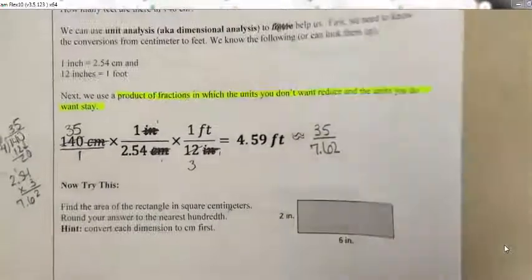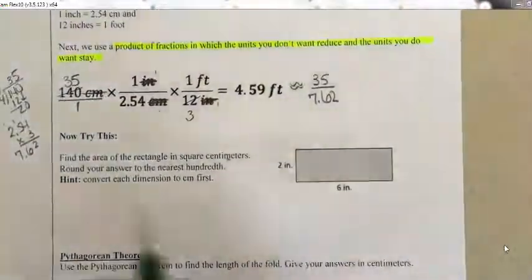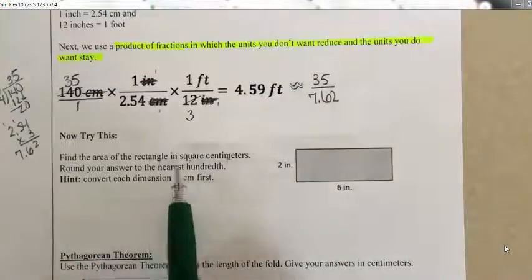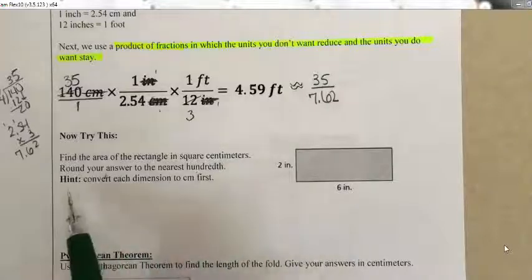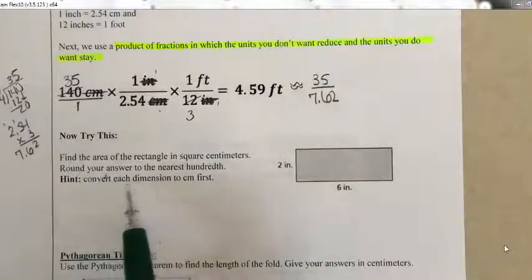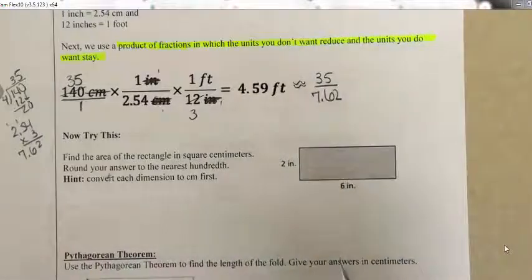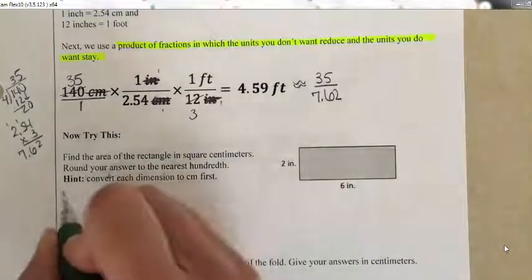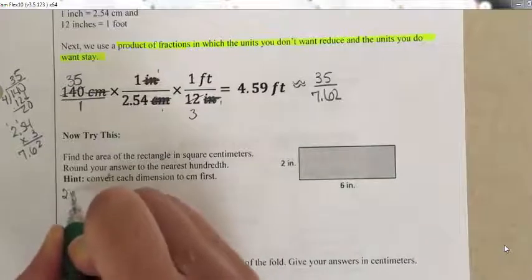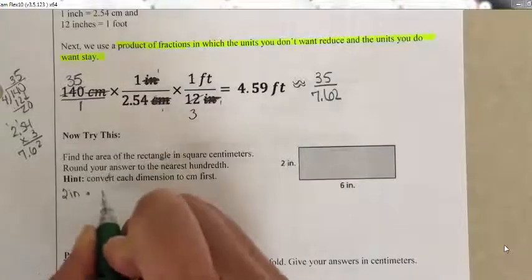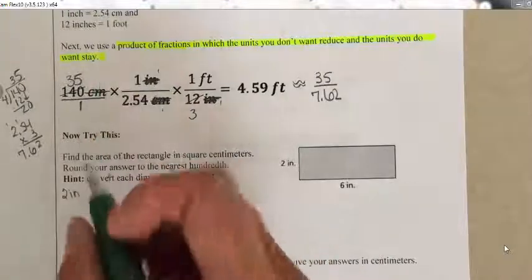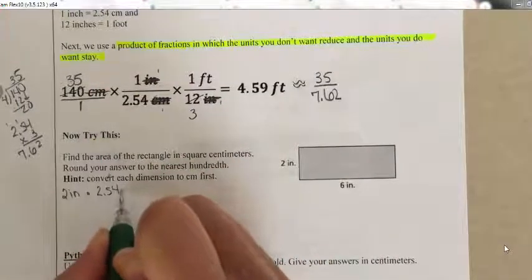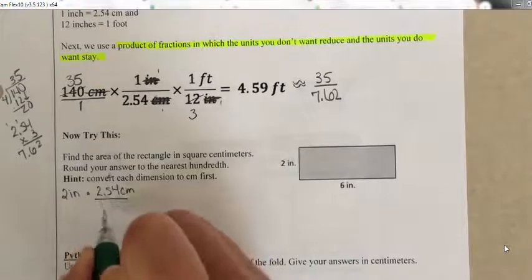Now let's try another one on our own: find the area of a rectangle in square centimeters, rounding to the nearest hundredth. The hint is to convert each dimension to centimeters first. I've got 2 inches that I need to change to centimeters. I'll start with 2 inches and multiply: there are 2.54 centimeters per 1 inch.